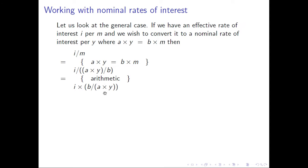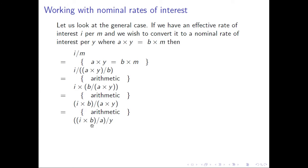We apply arithmetic, aiming for an expression with y on the bottom — something divided by y, i.e., something per y. We swap and move brackets using basic arithmetic rules of division and multiplication. Since we want an expression where y appears as a divisor, we apply one more transformation and obtain i×(b/a) divided by y. Since anything per y equals x/y, this divided by y equals i×(b/a) per y. And so this is our nominal interest rate per y.